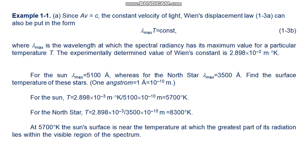For the North Star, T = 8300 Kelvin. At 5700 Kelvin, the sun's surface is near the temperature at which the greatest part of its radiation lies within the visible region of the spectrum. This suggests that over the ages of human evolution, our eyes have adapted to the sun.